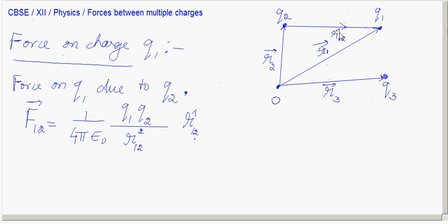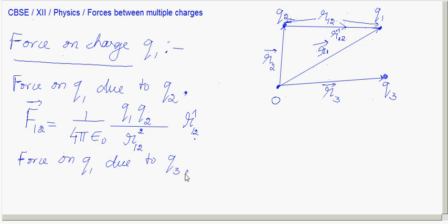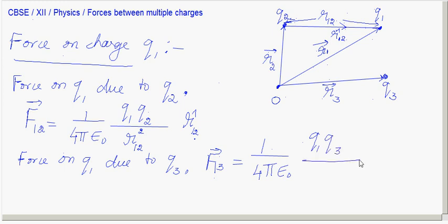Similarly, now consider Q3. The force on Q1 due to Q3, call it F13, equals (1 / 4πε₀) × (Q1·Q3 / R13²) × R̂13, where R13 is the distance vector from charge 1 to charge 3.